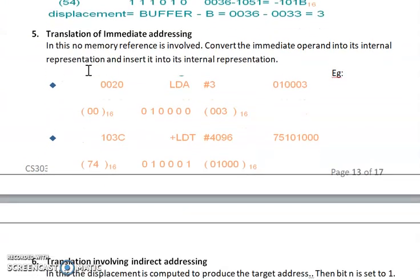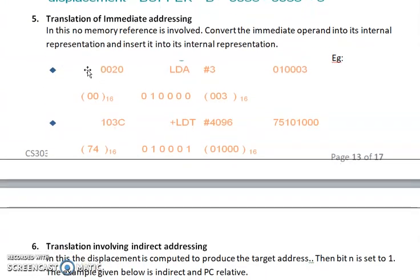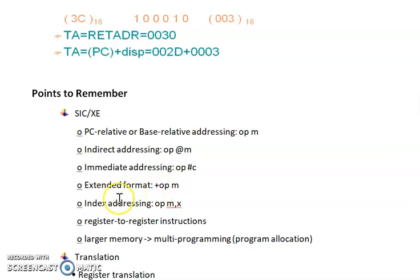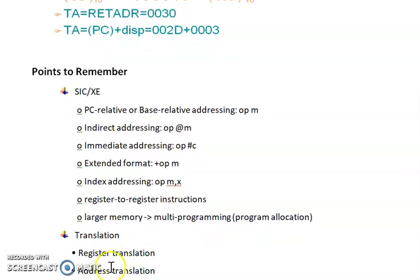For immediate addressing mode, there is no need for any memory reference because the value is directly given. You can just convert the immediate operand into its internal representation and insert it. The main points to remember: PC-relative or base-relative addressing is represented as opcode with memory value; indirect addressing mode has its own format; immediate addressing mode is opcode with immediate value, represented using a hash symbol; extended format is identified by a prefix plus symbol; indexed addressing mode has its own representation; and register-to-register instructions. There are two types of translations: register translation and address translation.